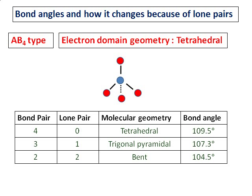With three bond pairs and one lone pair, the molecular geometry becomes trigonal pyramidal, and the bond angle becomes less than the tetrahedral bond angle. With two bond pairs and two lone pairs, the molecular geometry is bent, again with a bond angle less than the tetrahedral angle. Learn the bond angle for the perfect molecule with no lone pair, and you will see that the bond angle decreases due to the presence of lone pairs.